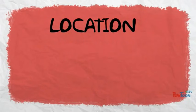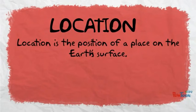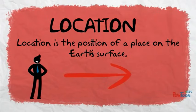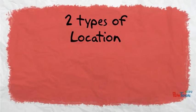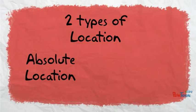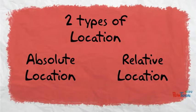Let's take a look at location. Location is the position of a place on the Earth's surface — in other words, where you are on planet Earth. There are two types of location: absolute location and relative location.